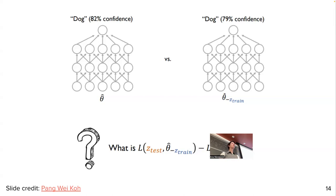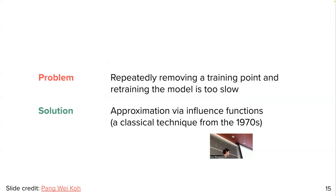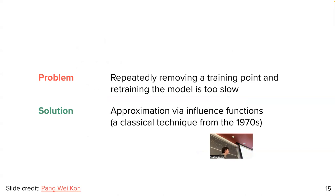Leave-one-out retraining is not feasible. We are trying to find a method that can approximate the difference between these two losses without retraining the model. Even the approximations can be slow. A paper from 2017 observed that we can use a classical technique from statistics that computes something like this. This is one of those nice examples where you learn a technique in some course, think you'll never use it, and then end up using it for something quite modern — a little life lesson.